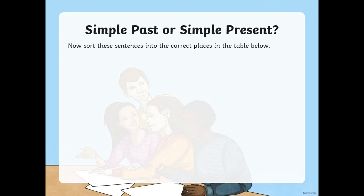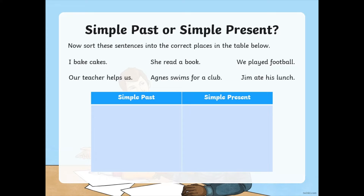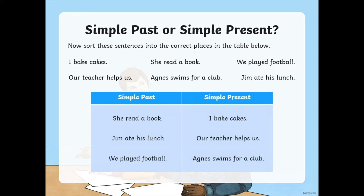Sort these sentences — are they simple past or simple present? 'I bake cakes. She read a book. We played football. Our teacher helps us. Agnes swims for a club. Jim ate his lunch.' The simple past ones are: 'She read a book', 'Jim ate his lunch', and 'We played football'. The simple presents are: 'I bake cakes', 'Our teacher helps us', and 'Agnes swims for a club'. Simple past is an action that started and finished in the past; simple present is used for something that happens regularly.